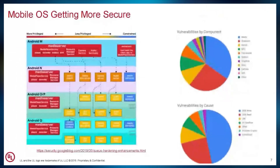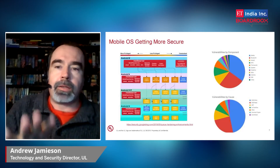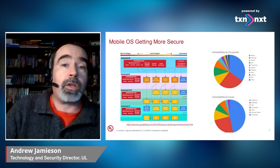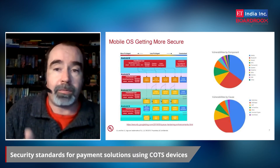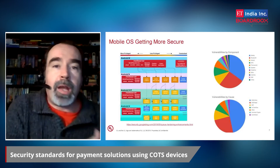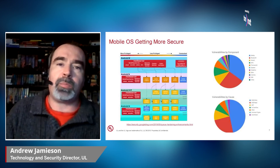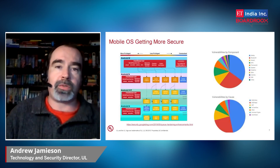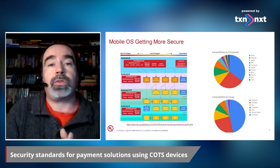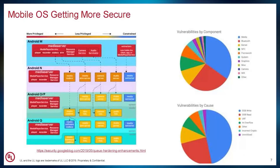Mobile operating systems are in fact becoming more secure over time — implementing better security features and management, not only at the operating system level but with each new version at the hardware level as well. A brand new, fully patched mobile phone is one of the most secure commercial systems you can buy on the market today. However, we do need to be concerned about security over time, and the fact that mobile phones are generally built as personal use devices, not as commercial systems for accepting payments — so the threat models are a little bit different.